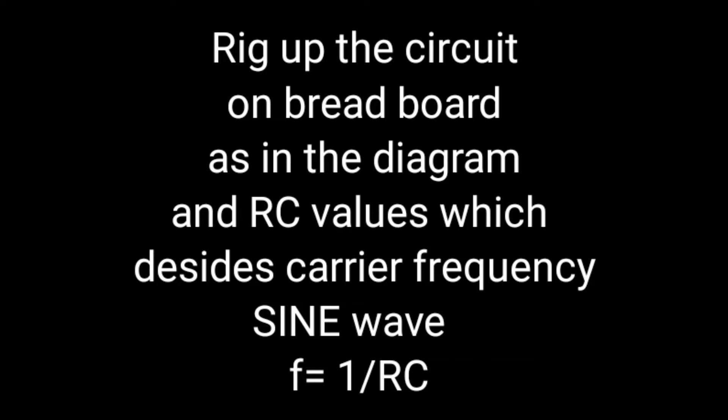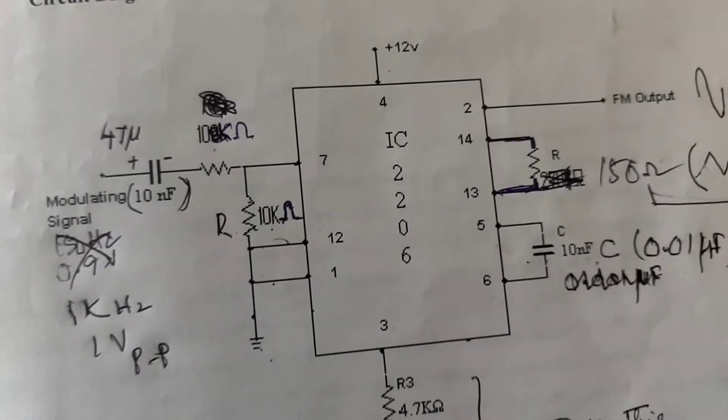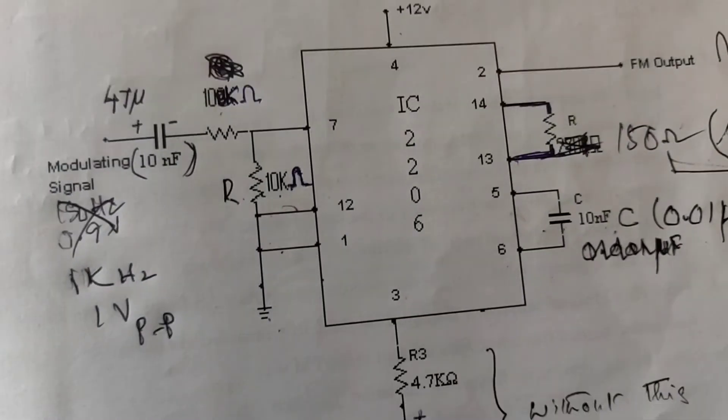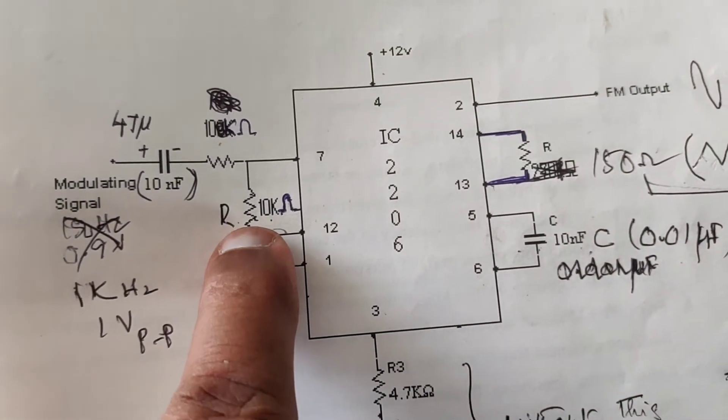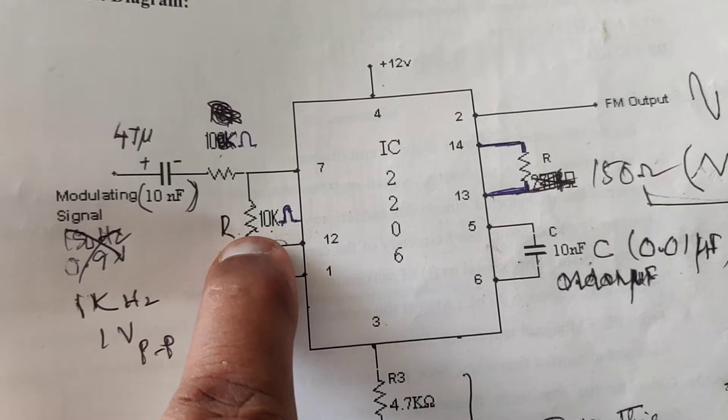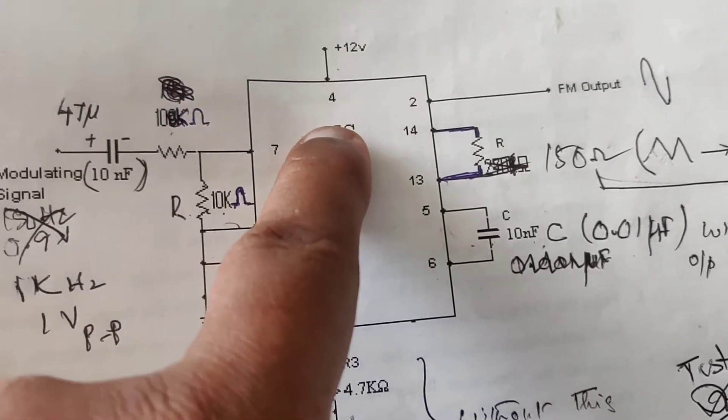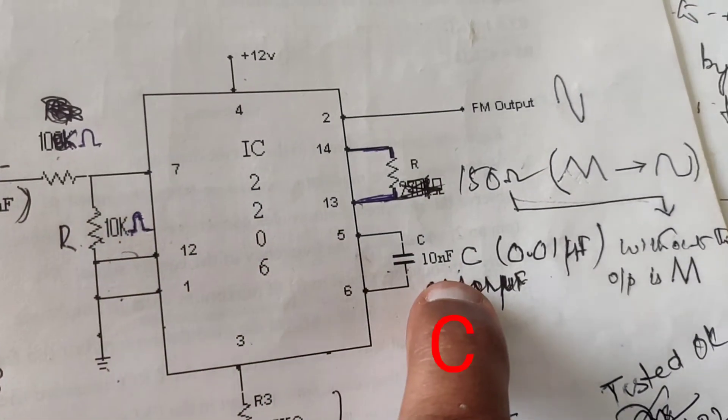Rig up the circuit on the breadboard as in the circuit diagram shown here. There are two important components to consider: R and C. Before connecting the circuit, mount the IC on the breadboard, connect VCC at pin number 4 and 1 to the ground. After that, connect R, 10 kΩ and C, 0.01 μF.